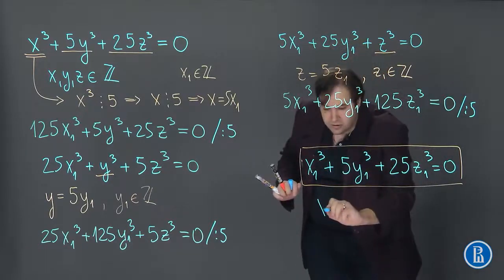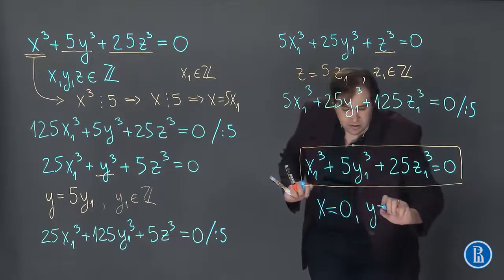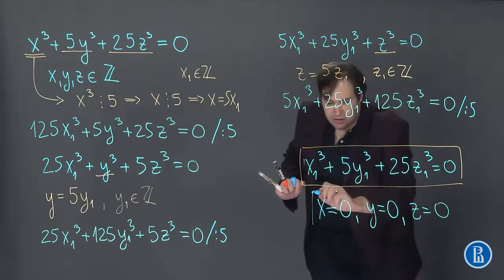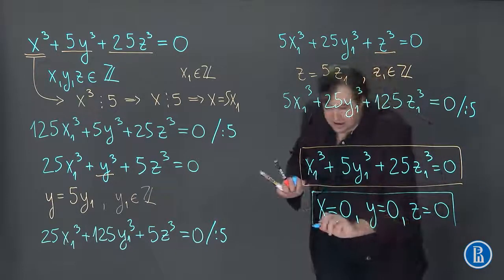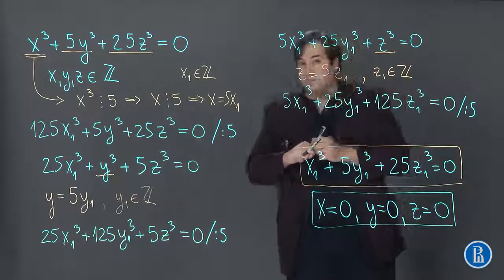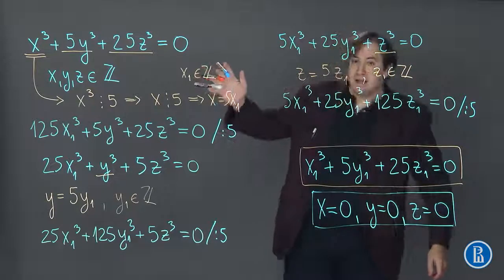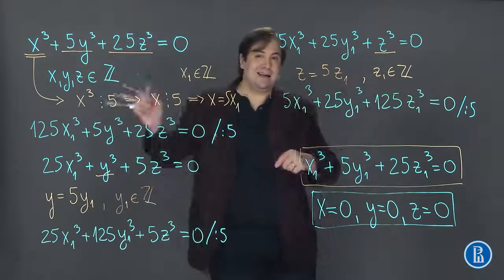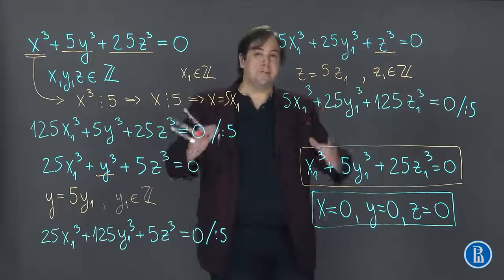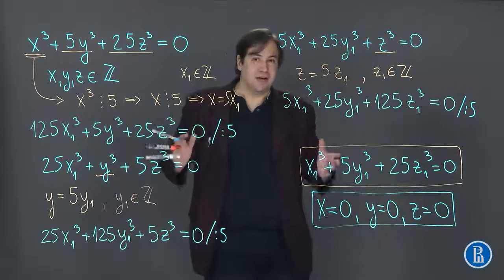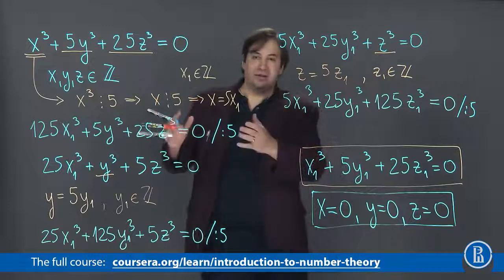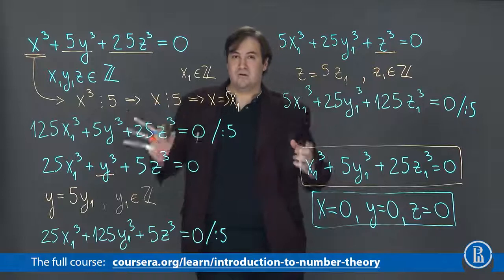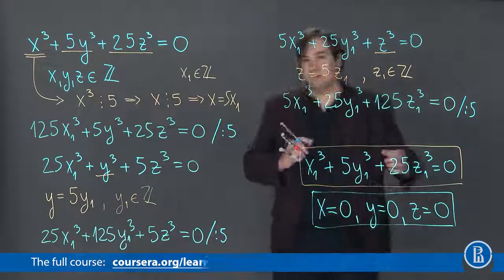So the only solution of our equation is 0, 0, 0, because if we had a non-zero solution of our equation, then we will divide it by 5 and again and again and eventually we will come up with a non-integer number which contradicts our conclusions on each of these steps. So the only solution of this equation is (0, 0, 0).